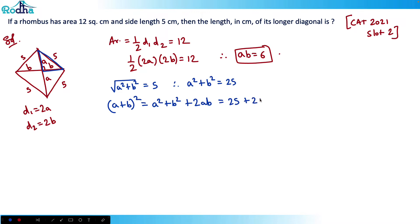So A plus B, it will be equal to under root 37. It should be plus minus actually, but minus won't make any sense because side length cannot be negative. So I'll take plus only, root 37 only.